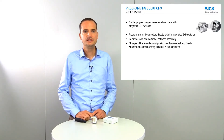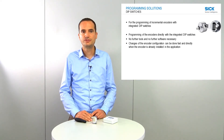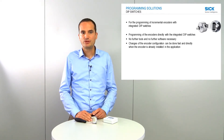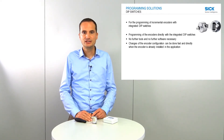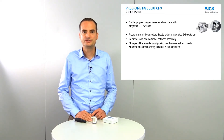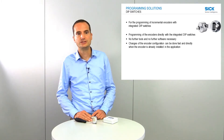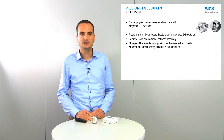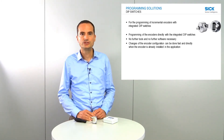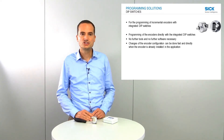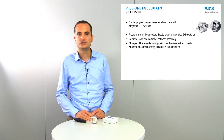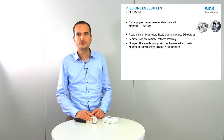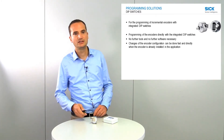Another programming possibility is the so-called DIP switches. This is for the programming of incremental encoders with integrated DIP switches. Programming is done directly by setting different combinations of DIP switches, and you do not need any further tools or software. Changes to the encoder configuration are done directly in the application. You can change, for example, the resolution, the electrical interface (TTL or HTL), and also the counting direction of the incremental encoder.